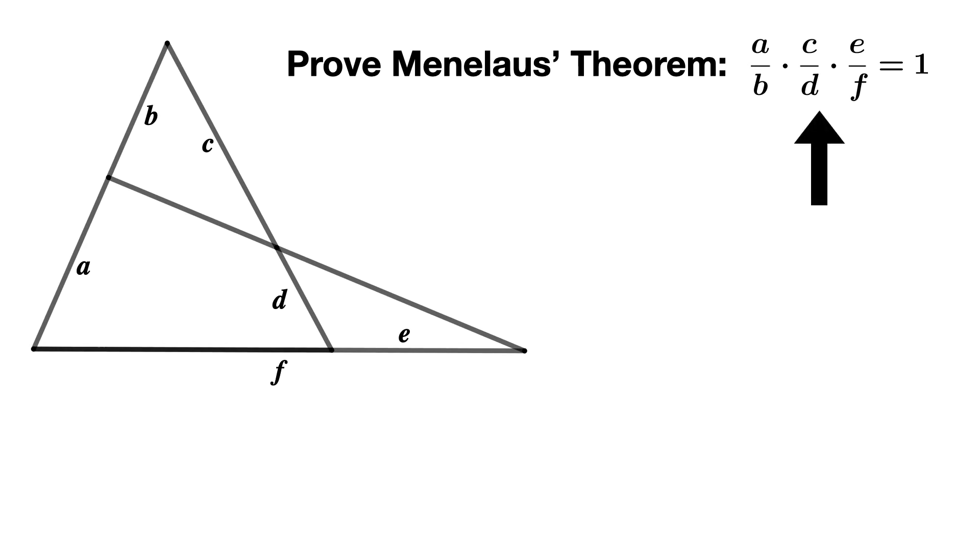Now because our conjecture involves ratios, we should recognize that we need to look for similar triangles. And in order to form similar triangles, we'll need to draw an auxiliary line that's parallel to a side of the triangle.